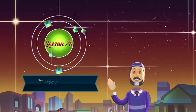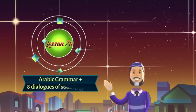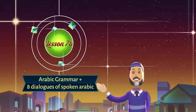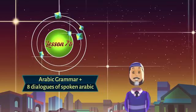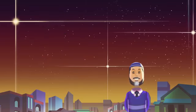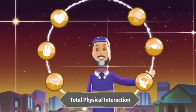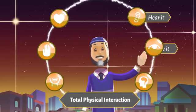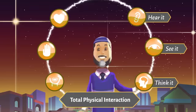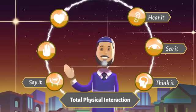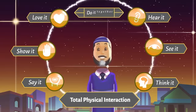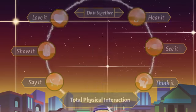Lesson number 7b, in which we will learn Arabic grammar plus 8 dialogues of spoken Arabic. Remember to use TPI, which is: hear it, see it, think it, say it, show it, love it and do it together.